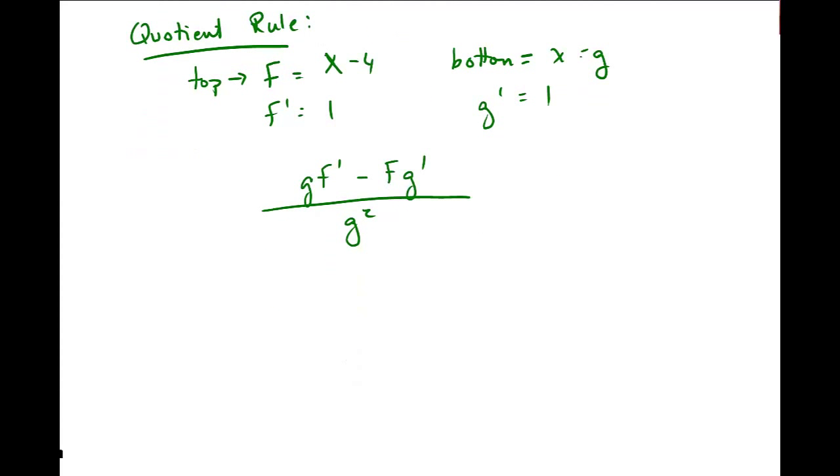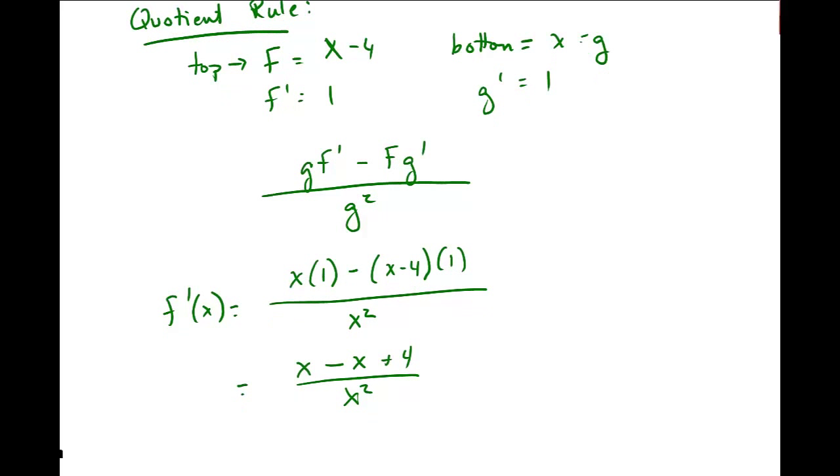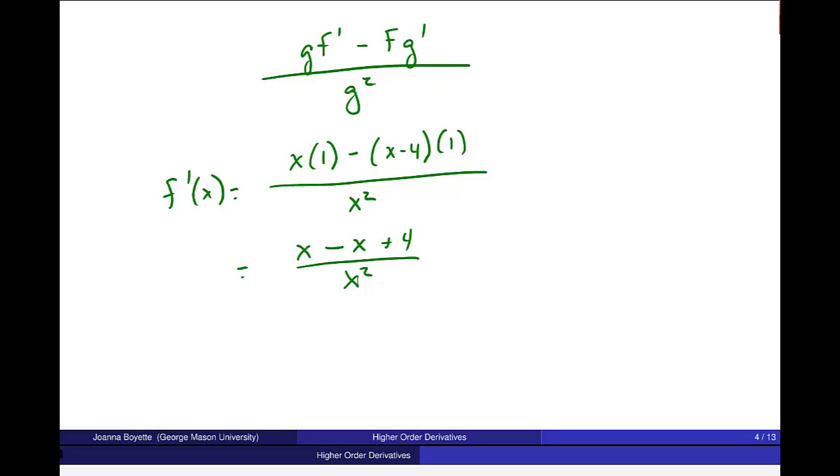So let me go ahead and plug this in. Let's see. g is just x, and f prime is 1, minus f. And g prime is just 1. And g squared is x squared. So, and this is my real, my original function, f prime. So let me simplify this because I want to take the derivative again. I have a purpose in simplifying. Minus x plus 4 over x squared. And this simplifies to just be, I think, 4 over x squared for the first derivative. Is that what you guys get? OK, so 4 over x squared, now I want to take the second derivative, right?